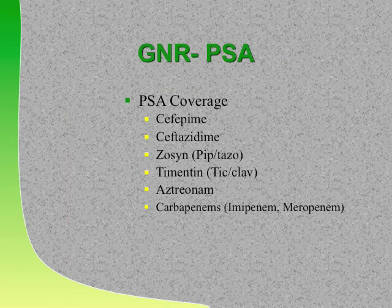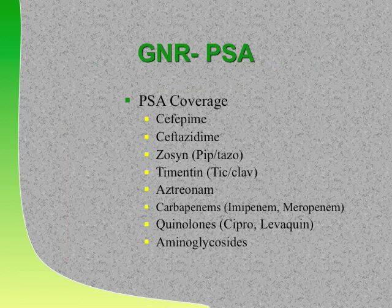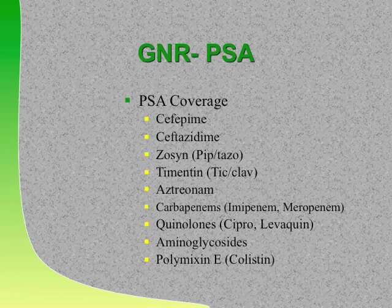Carbapenems are the next option. What other drugs can we use that work in locations other than the cell wall? Aminoglycosides and quinolones. For extra credit: what drug do you use when all these drugs don't work and it's multidrug resistant? Your last choice, developed in the 1950s and 60s—colistin, or polymyxin E.